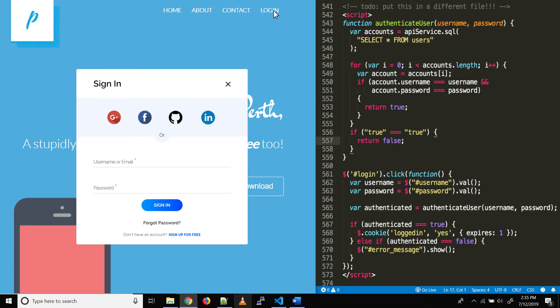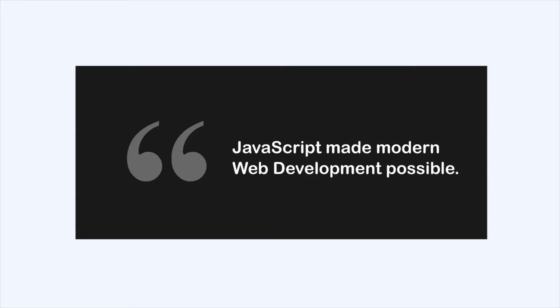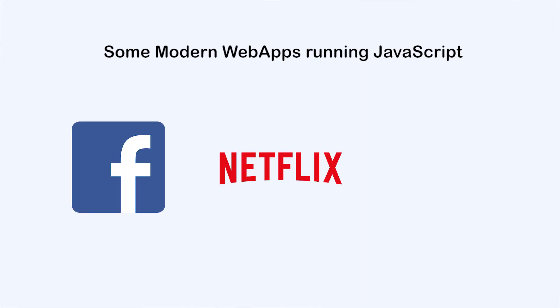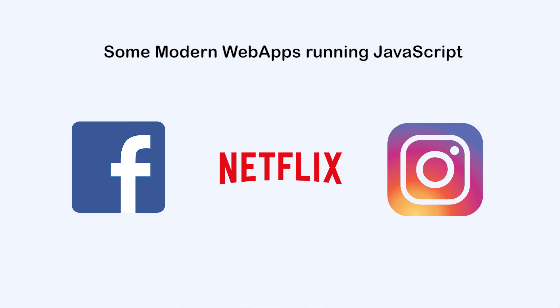For example, showing a pop-up on a button click or showing page progress on scroll. JavaScript is a great language to learn today because it is what made modern web development possible. It adds dynamic effects and interactivity to modern websites. Even major web applications like Facebook, Netflix, and Instagram are running JavaScript frameworks and libraries under the hood.